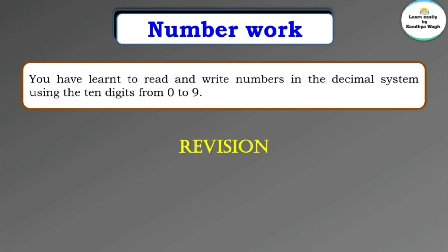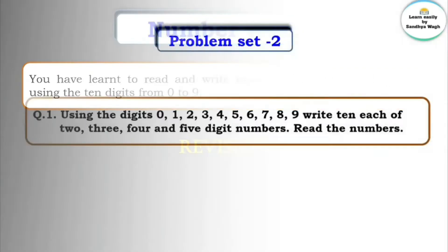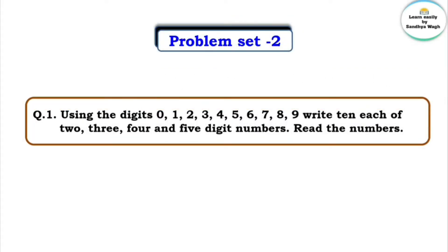Now let's revise. Problem Set 2, Question 1: Using the digits 0, 1, 2, 3, 4, 5, 6, 7, 8, 9, write 10 each of 2, 3, 4, and 5 digit numbers and read the numbers.